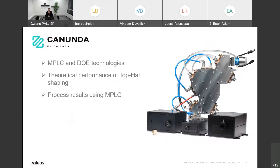The agenda today will be in three main parts. I want to start by explaining the technology itself — MPLC — which is pretty original, and make a comparison with diffractive optical elements. Then we'll go into the theoretical performance for top hat generation. I'll explain beam shaping quality criteria and what are the main criteria for efficient material processing. The last part, probably the most interesting, will be about process results with different partners using beam shaping to improve laser processes.